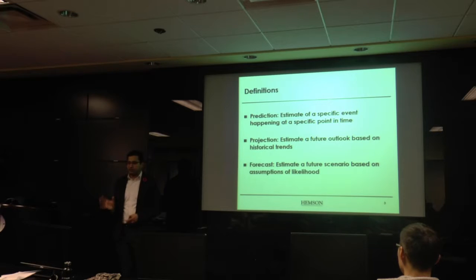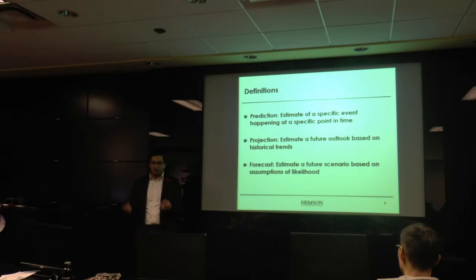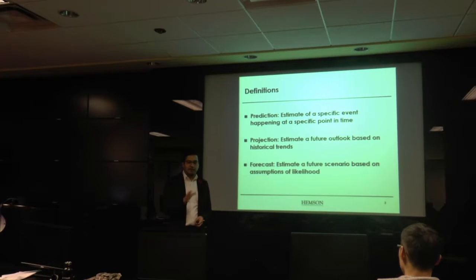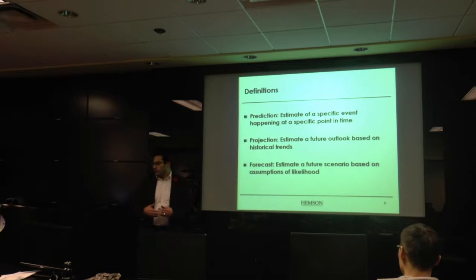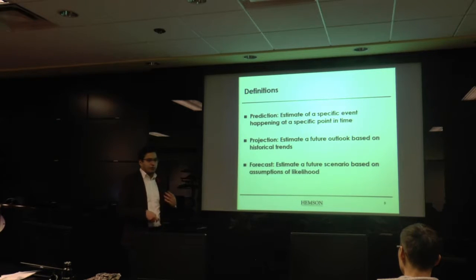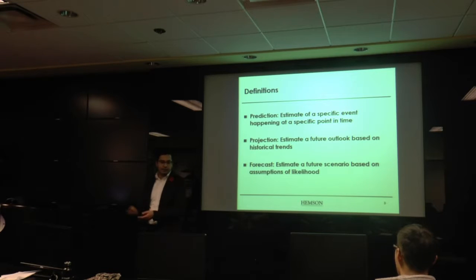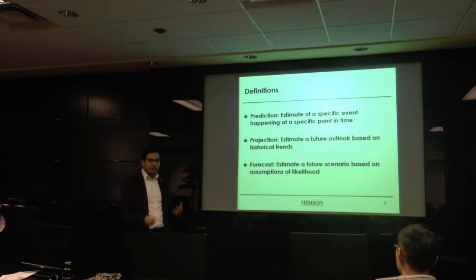Before we start, some ground-truthing on what we mean by forecasting — there are really three terms that get thrown around. A forecast is not a prediction. A prediction is a specific event happening at a specific point in time, like saying tomorrow it will rain at 10 p.m. A projection looks at future trends based on the historical record. Forecasting is where we look at different scenarios for the future, taking into account different assumptions — for example, knowing atmospheric pressure is rising and considering whether that changes when or whether it will rain.